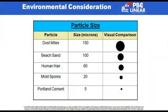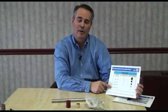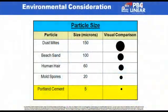To quantify what I mean by fine particles, I have a table which describes some common objects and their relative diameters. As an example, we're all familiar with human hair and how fine it can be. A typical human hair is approximately 60 microns. In contrast, when I refer to a fine particulate, something like Portland cement — which is roughly the same texture as talcum powder — you're dealing with a particle that is approximately 5 microns in diameter.